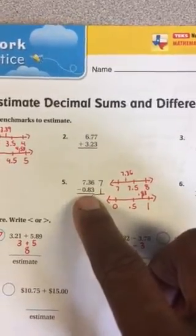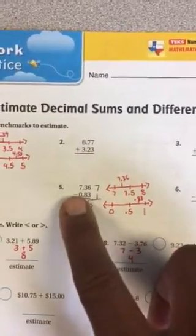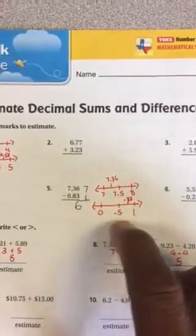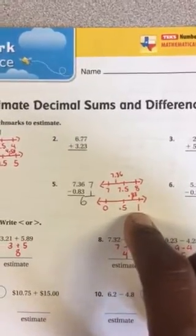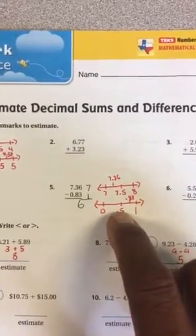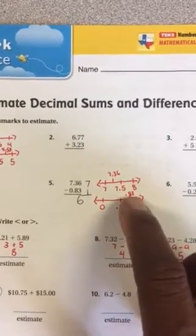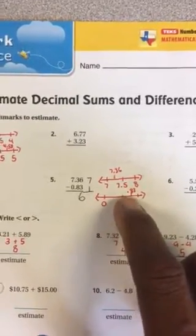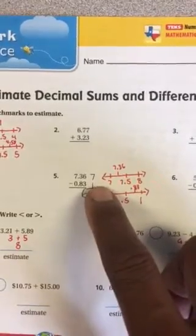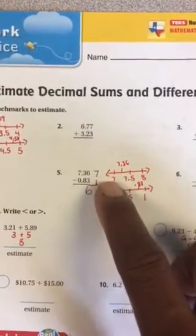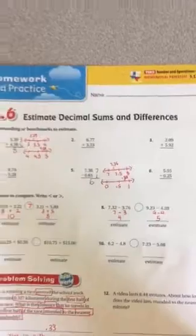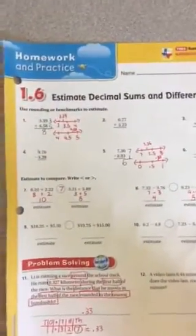0.83 hundredths. That's going to be in between 0 and 1 whole. In the middle is 5 tenths or 1 half. So 83 hundredths is more than 50 hundredths. So 83 hundredths is closer to being 1 whole. So I'll do 7 minus 1 and that gives me 6. All right.